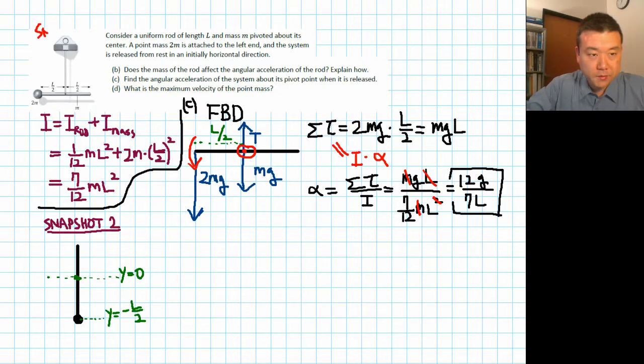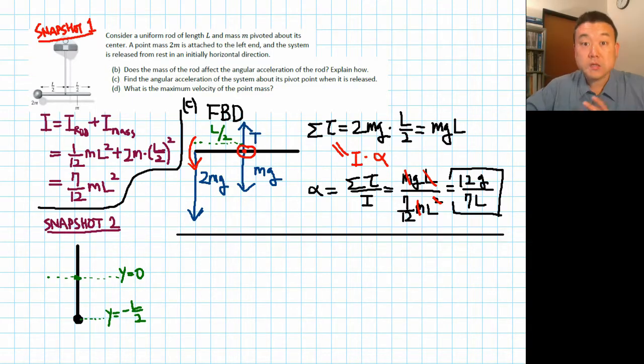Let me label snapshot 1. Snapshot 1 is what we've been working with the whole time, the initial setup that was given in the problem. Let's just start out with the conservation equation. This looks like a situation that should conserve energy. So let's say energy is conserved, conservation of energy.